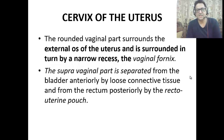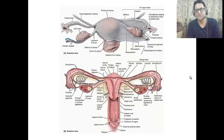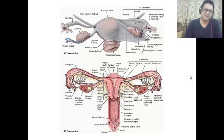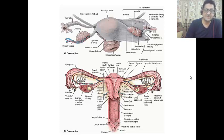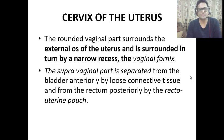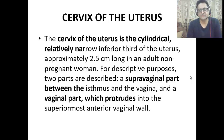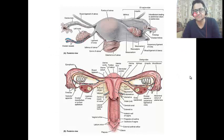The uterus has an external os and an internal os. The external os is the opening of the cervix that communicates with the vagina. The internal os is the part of the cervix that communicates with the uterine cavity. The vaginal fornix is the vaginal recess that surrounds the external os.